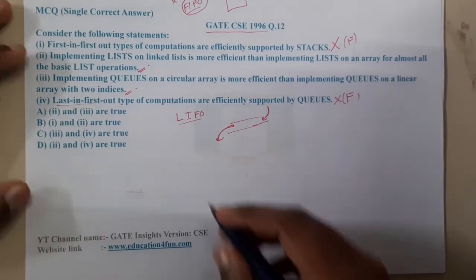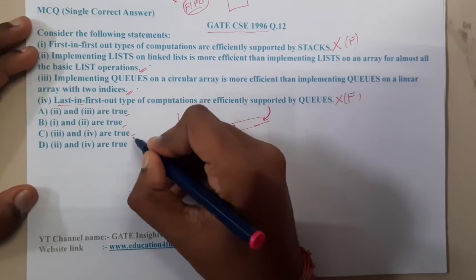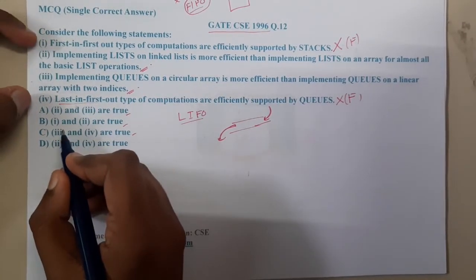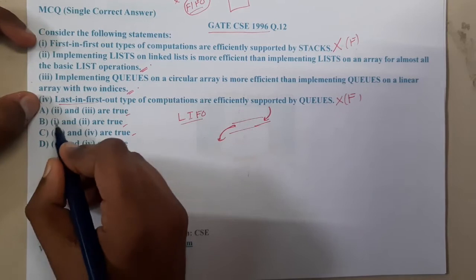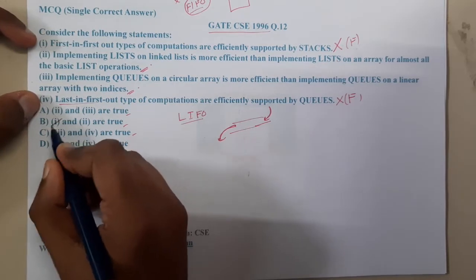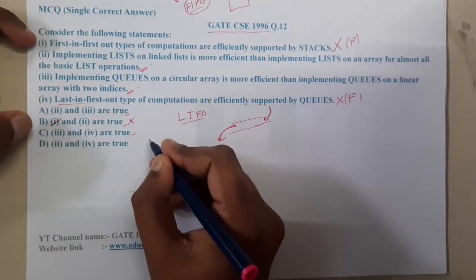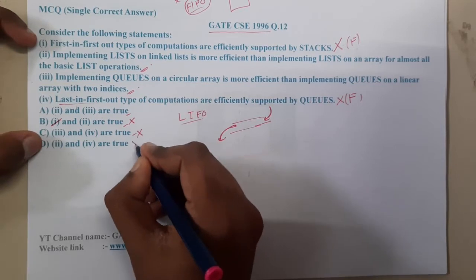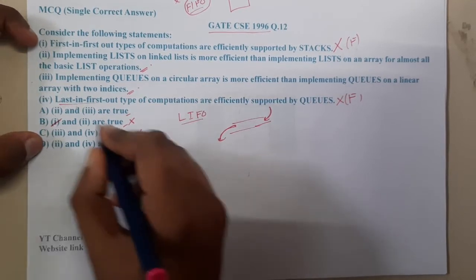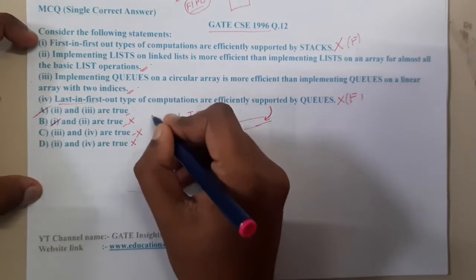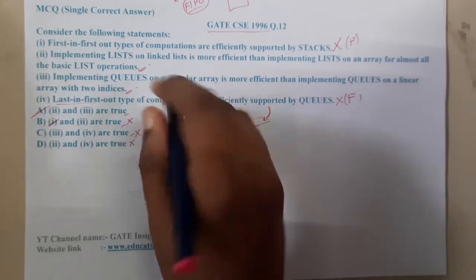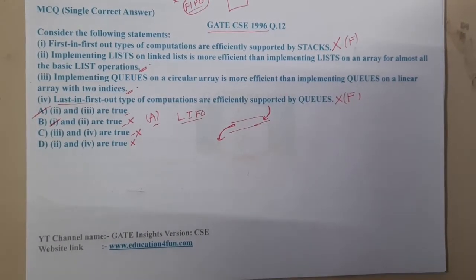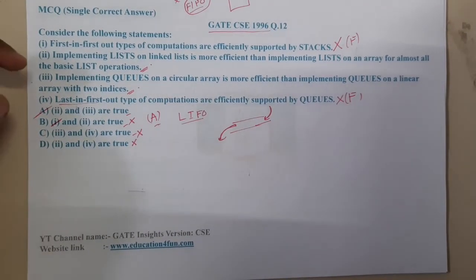Now checking the answer options: statement one is false and statement four is false. Any option containing (i) or (iv) is wrong. By elimination, we are left with only one option — the answer should be A, which contains only statements (ii) and (iii). Let us confirm (ii) and (iii) as well.